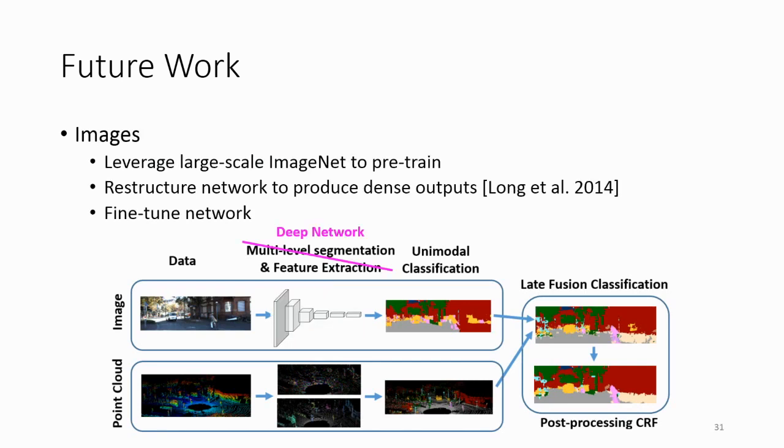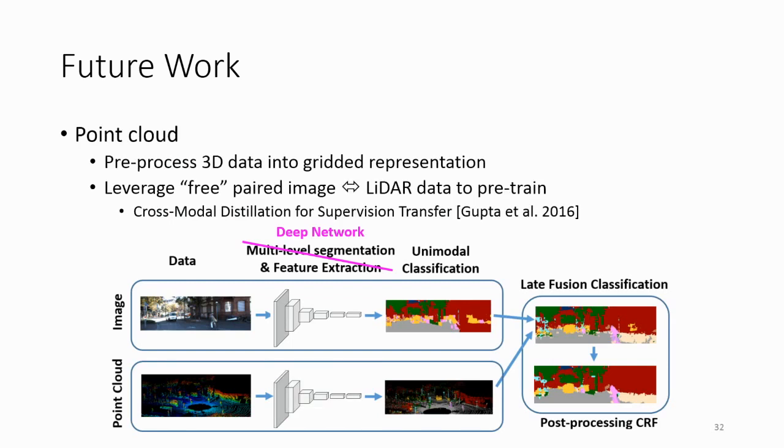We see that we have a lot of hand-engineered steps like the segmentation and the feature extraction. On the image side, we know that we can replace this with some well-known tricks. We can take a CNN, pre-train it on ImageNet, take the network, copy the weights over, restructure the network to produce dense outputs using some well-known tricks, and then fine-tune the network to our specific data.